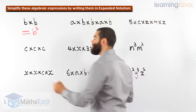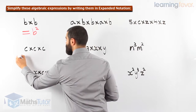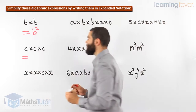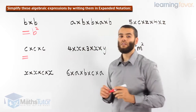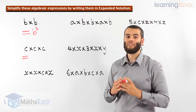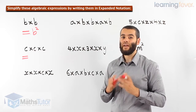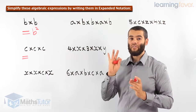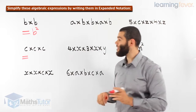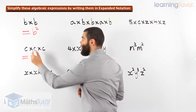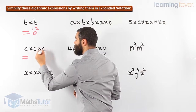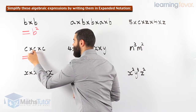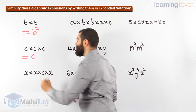This one here: c times c times c. What do you think is going to happen? How many c's are there multiplying each other? There are 3 c's — 1, 2, 3 — c to the power of 3. It's that easy.